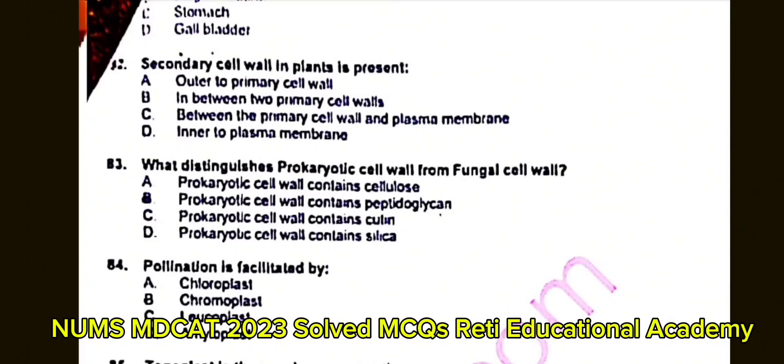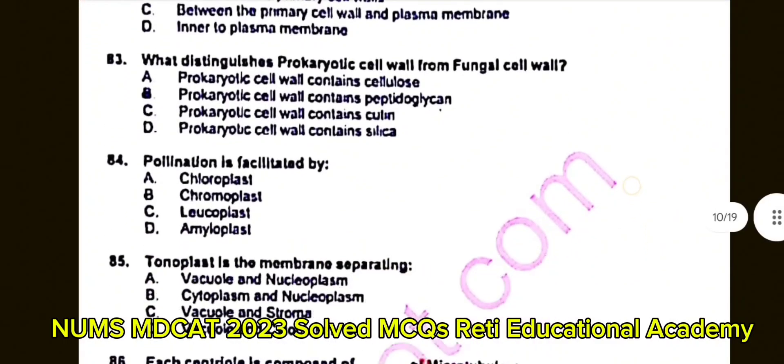Question number 84: Pollination is facilitated by? A. Chloroplast. B. Chromoplast. C. Leucoplast. D. Amyloplast. The correct answer is B: Chromoplast.